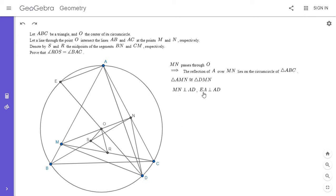So since both MN and EA are perpendicular to AD, it follows that MN has to be parallel to EA.